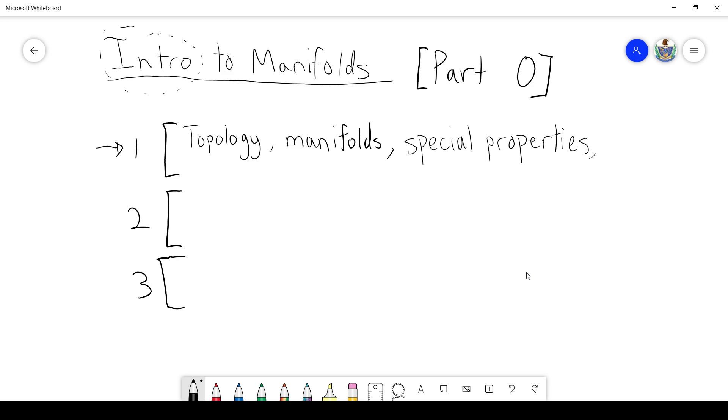And then, whenever we talk about mathematical structures, so a manifold is a mathematical structure, there's always special properties that such structures can have. So we'll talk about that. Then mappings, so functions from one manifold to the next, continuous mappings, smooth mappings.